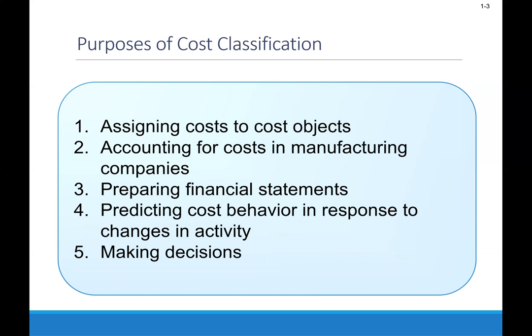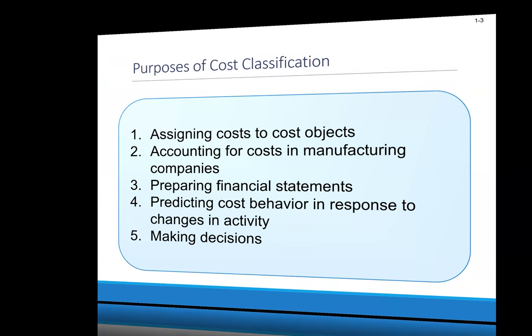In order to understand this course, this chapter focuses on classifying costs. We're going to assign costs to what we call cost objects, and we're going to account for cost in manufacturing companies, ultimately preparing financial statements. Part of Managerial Accounting is to try to determine how costs can change in response to various activity changes, ultimately providing information so those managers can make the necessary decisions.